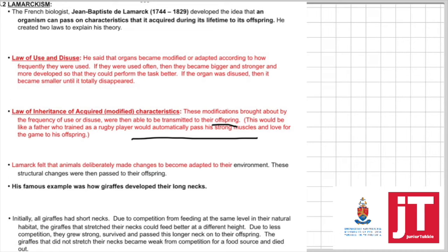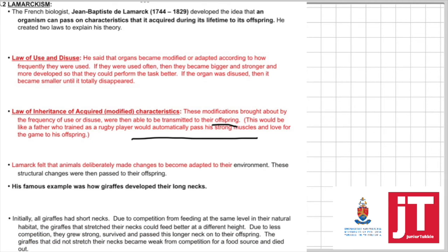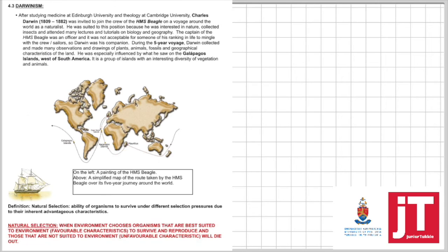These are the two laws. How are you going to be tested? You will be asked to apply the laws to examples, so practice past papers. Now let's look at why Lamarck's theory is not accepted. Unfortunately, organisms don't just evolve because they want to. Organisms become suited to the environment and acquired characteristics are not passed on to offspring, but rather genetic characteristics are passed on.